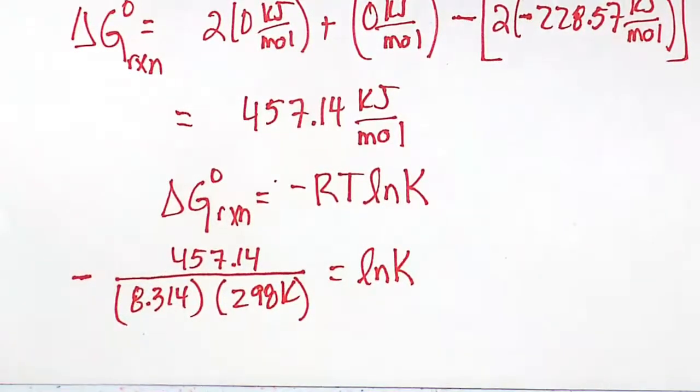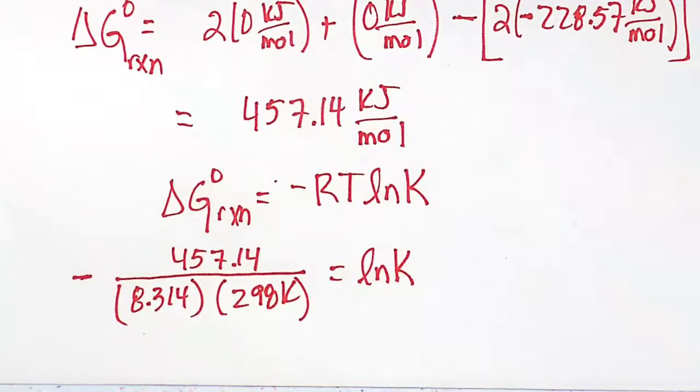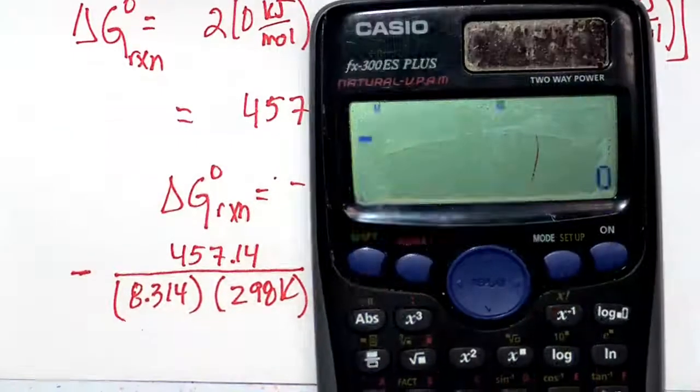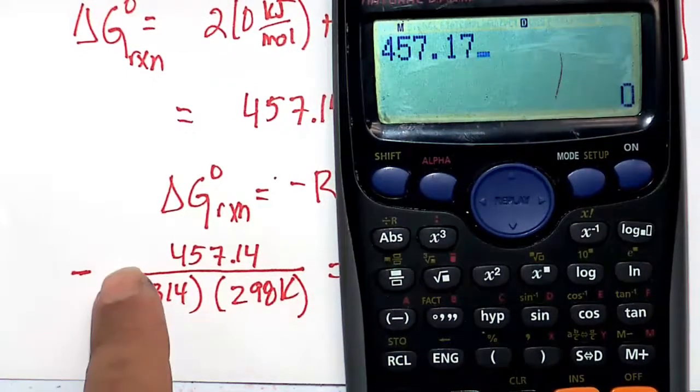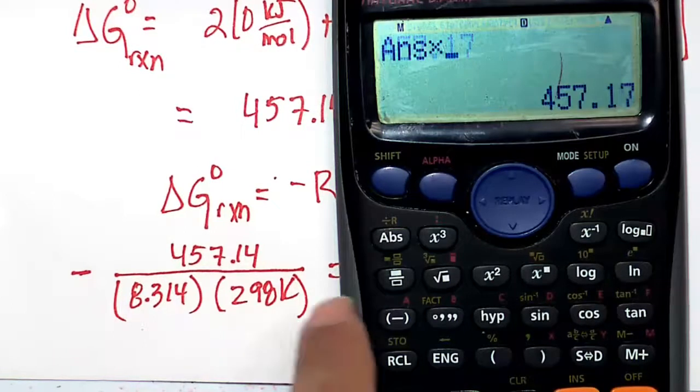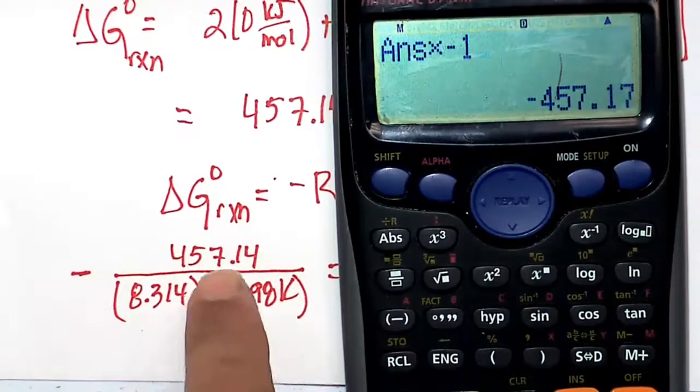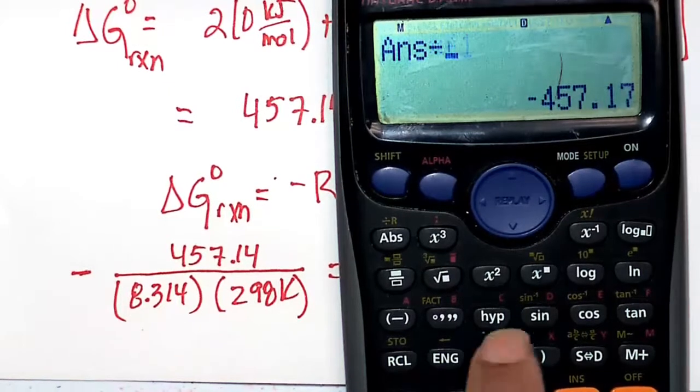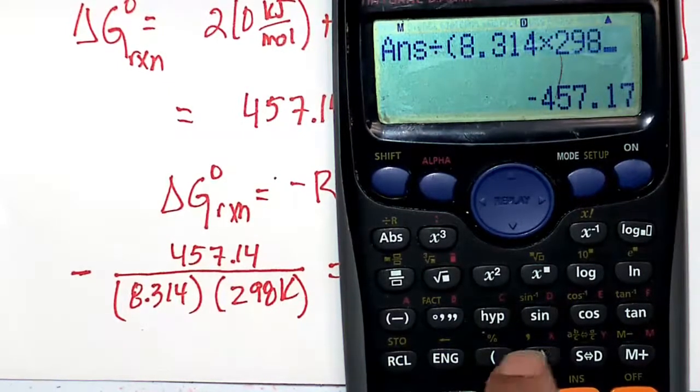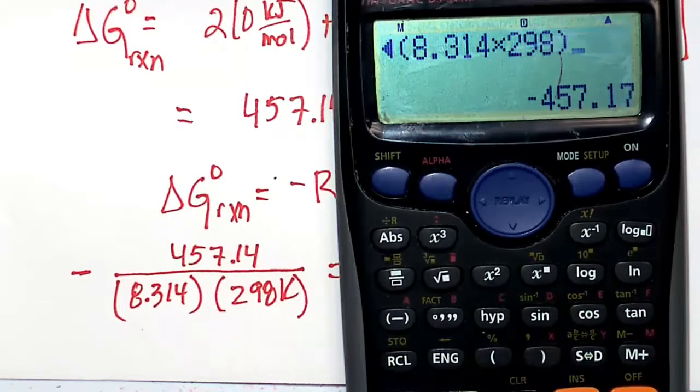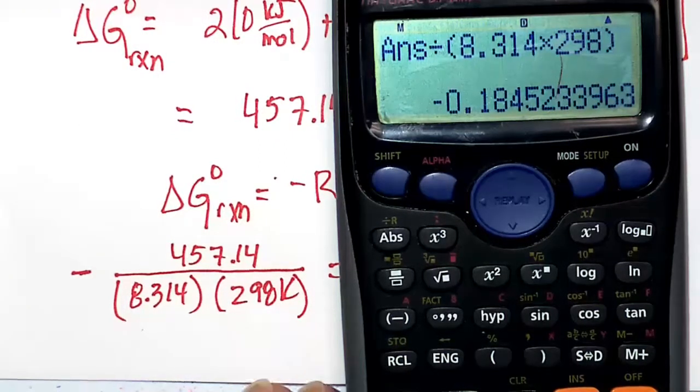All right, so let's take e of both sides of the equation. One thing we can do is just go ahead and solve that complicated fraction in our calculator before we take e. So 457.14, don't forget the minus sign.